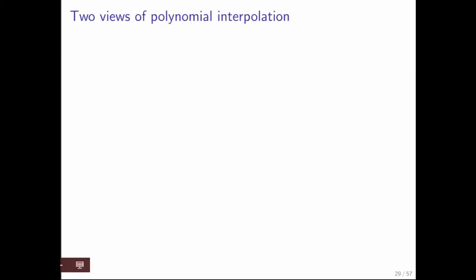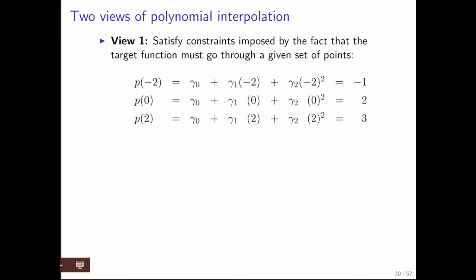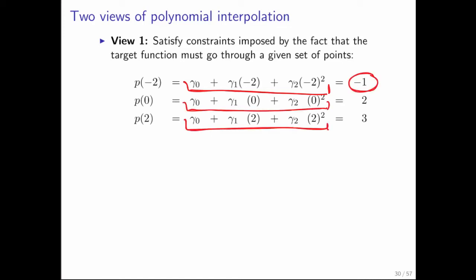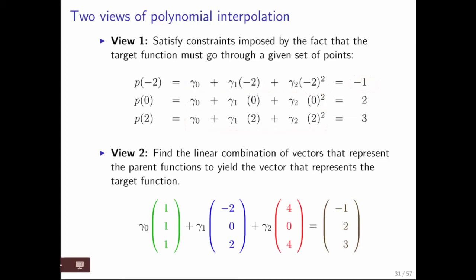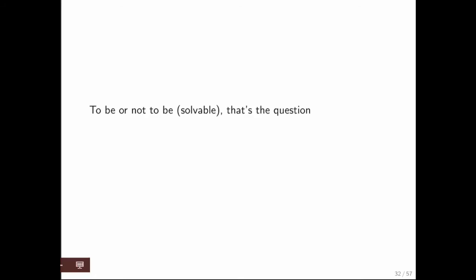So we have two views of polynomial interpolation. View one is that you set it up as equations that must take on certain values. View two is that we have vectors representing the parent functions, and the question is how to take linear combinations of those vectors to come up with the vector representing the discretized target function — in this case a quadratic. Then the question becomes when is such a system solvable and when is it not.